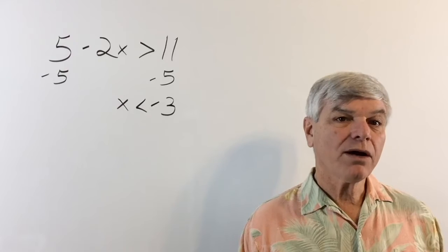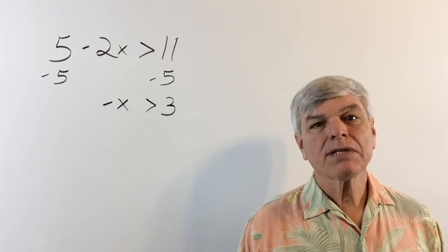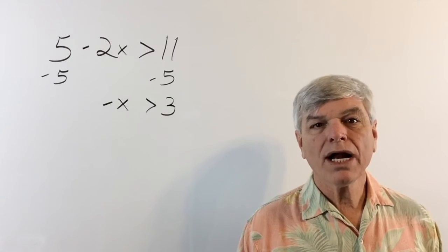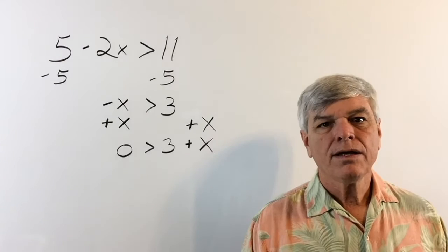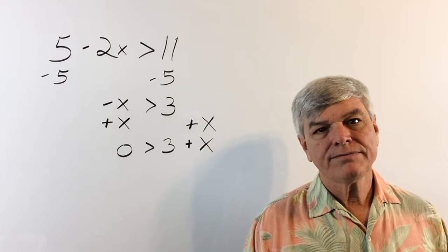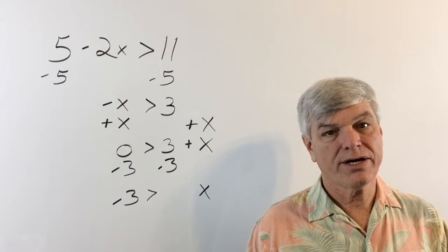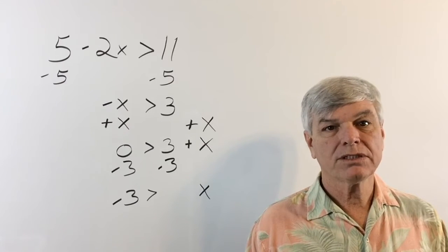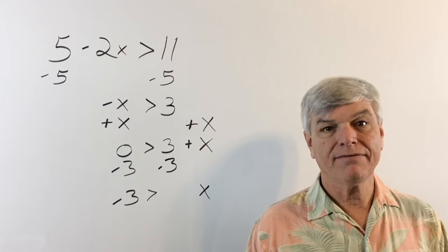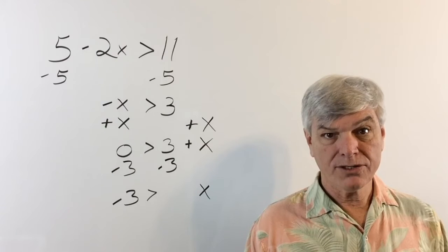Let's go back to where we had negative x is greater than 3. Rather than multiplying by negative 1, why not move x to the other side and move the 3 to the other side? Now we have negative 3 is greater than x. Or, if you read that backwards, it would be x is less than negative 3. Remember, that arrow is always pointing to the smaller number.